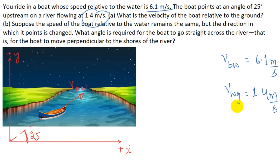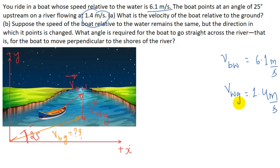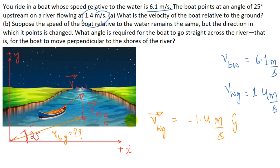This angle is 25 degrees. The velocity of water with respect to ground is in the downward direction — this is the velocity of water relative to ground. What we have to find is the velocity of the boat relative to ground. The speed of water relative to ground is 1.4 meters per second, so the velocity is 1.4 meters per second in the negative y direction: minus y-hat.